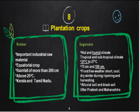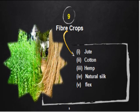Brazil is traditionally the largest producer of sugarcane, but in 2018 India became the largest producer in the world. Jute, cotton, hemp, natural silk, and flax are all fiber crops and cash crops grown to make paper, cloth, rope, and other things. They have a high concentration of cellulose. Natural silk is obtained from cocoons of the silkworm, reared on mulberry trees. The science of rearing and cultivating silk is called sericulture. Bhagalpur in Bihar is known as the Silk City of India.